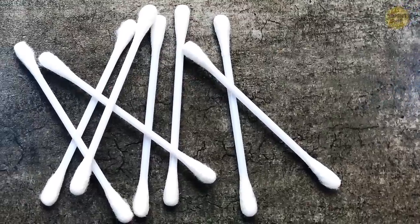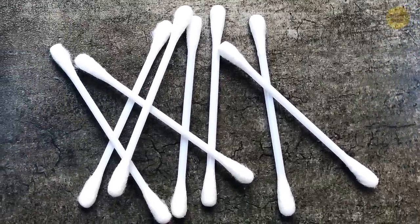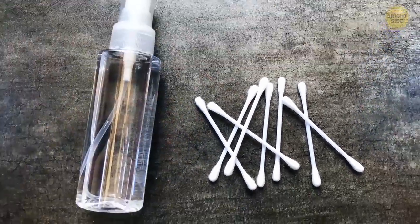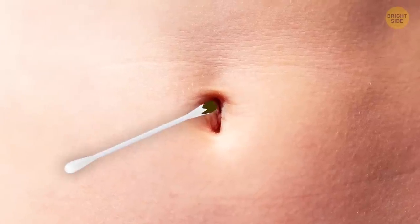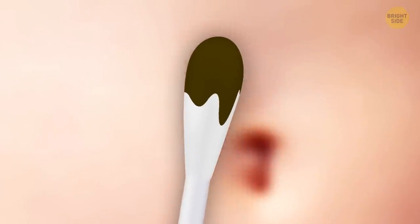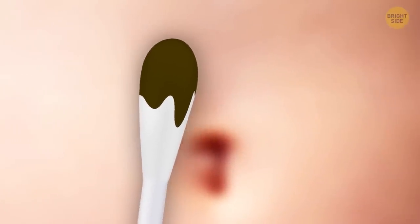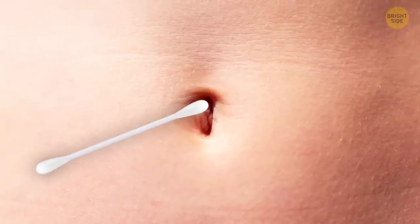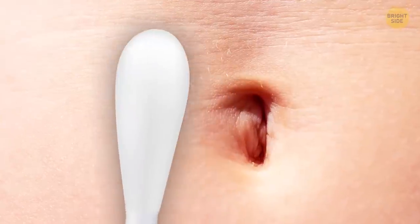For proper navel care, take a cotton swab, dip it in rubbing alcohol, and rub the insides of your belly button. Stare in horror at how dirty your cotton swab has become. Then take another one and repeat the procedure until the swab comes out clean.